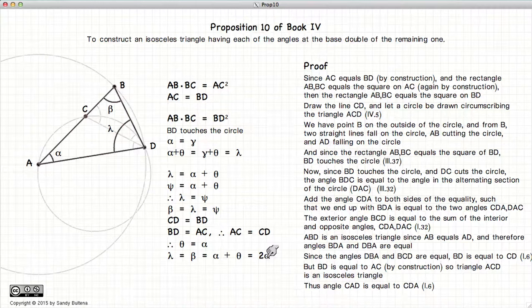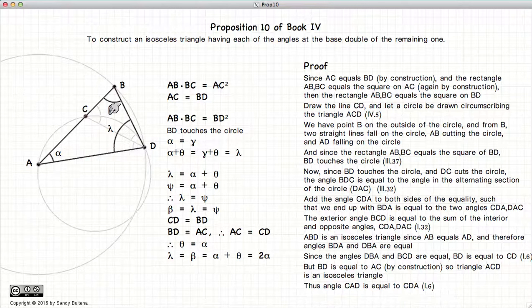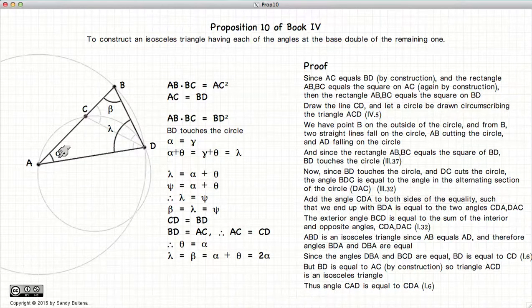So there we have shown that this is an isosceles triangle, but more importantly that beta is twice the angle alpha and lambda is twice the angle of alpha. And so there we have proven that this isosceles triangle has the special properties that we say it has.